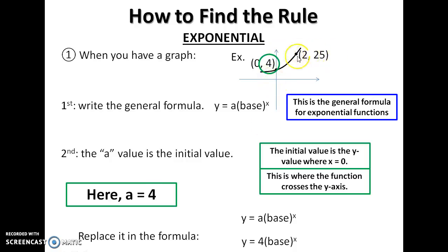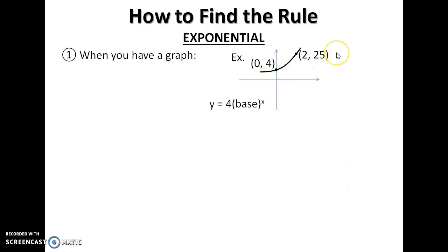Next, I'll take the other point that we have and replace those in for x and y, respectively. x and y plug in. Now here, we can't do this exponent because we don't know the base. So what I can do first is divide both sides by 4.